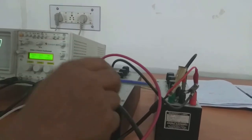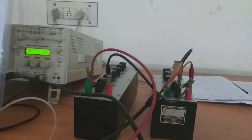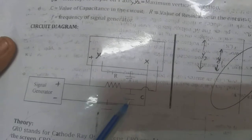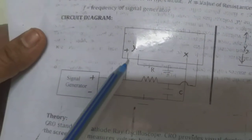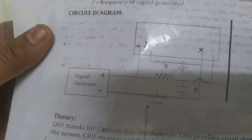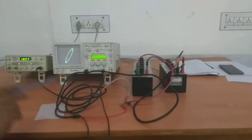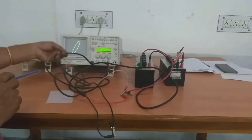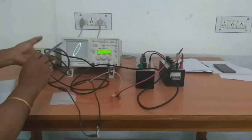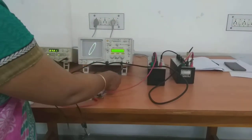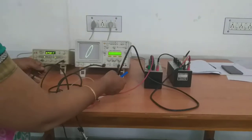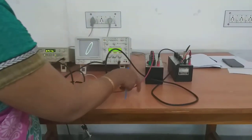The resistance and capacitance are connected in series. X is connected to the capacitance and Y is connected to the signal generator. You can observe the actual connections already done in this experiment — the Y terminal is connected to the function generator and the X terminal is connected to the capacitance box, with the RC circuit connected in series.